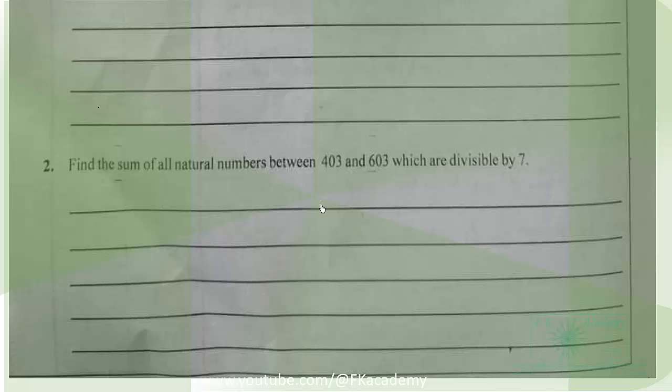We have question number two here for the Wasey Feather mathematics paper two, elective mathematics paper two. The question is asking us to find the sum of all natural numbers between 403 and 603 which are divisible by seven.